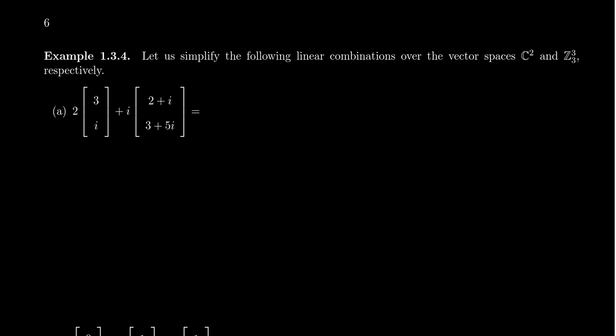Multiplication takes precedence over addition. So we're going to first do the scalar products here. So 2 times the vector 3i will give us 6, 2i for the first vector. And for the second vector, when we scale by i, you're going to get i times 2, which is a 2i. But then you're going to get i times i, which is negative 1.